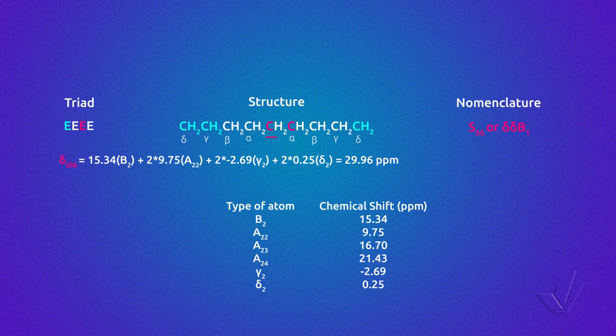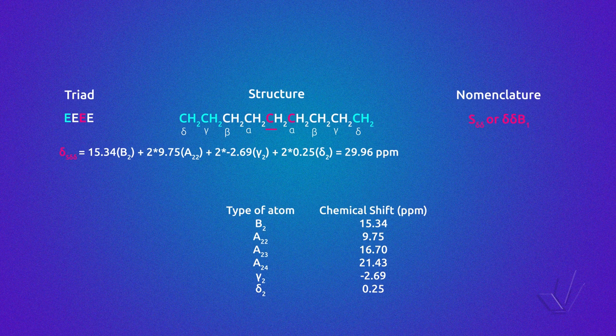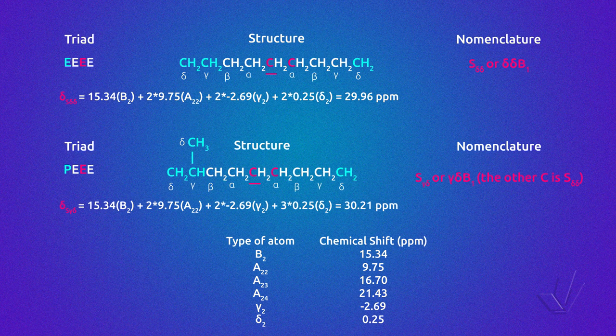The chemical shift of this carbon is calculated using the constants corresponding to a secondary carbon B2 in the table, taking into account the two secondary alpha carbons bonded to it. The beta carbons are already included in those constants. Then the constants for the two gamma and two delta carbons are added, resulting in a chemical shift of 29.96 ppm for this carbon. The other carbon of the central unit also has the same environment, resulting in the same chemical shift.